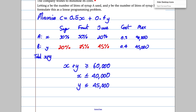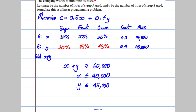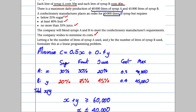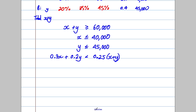For the sugar constraint: from syrup A we get 30% so that's 0.3x, and from syrup B we get 20% so that's 0.2y. The total sugar must be below 25% of the total, so: 0.3x + 0.2y < 0.25(x + y).